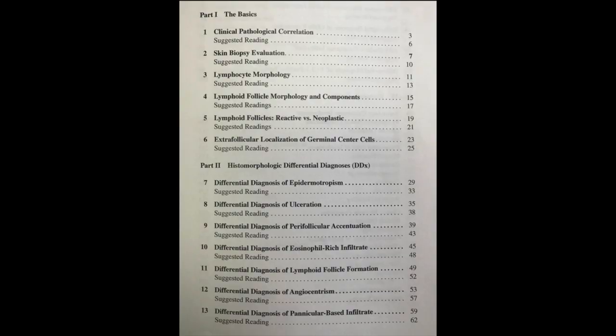Let's take a look inside the book. Here's the table of contents. You're going to start with the basics, and I really like the way the book handles the basics — it talks about what lymphocytes actually look like morphologically, the different types of lymphocytes at a cytologic level, lymphoid follicles and how they're composed, how to tell reactive and neoplastic apart. Really great stuff. Then, instead of jumping right into the different entities and different diseases, Dr. Subtil goes through the histomorphology differential diagnosis.